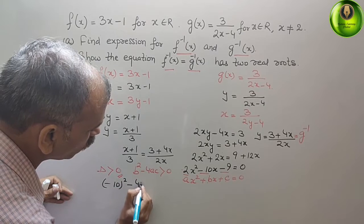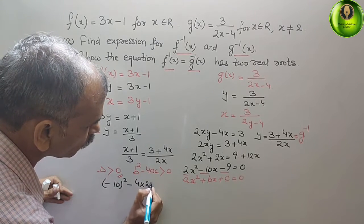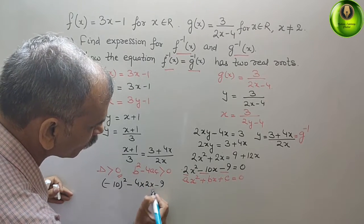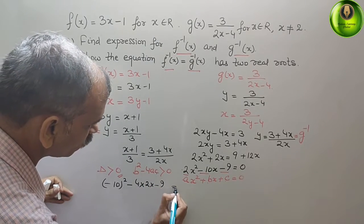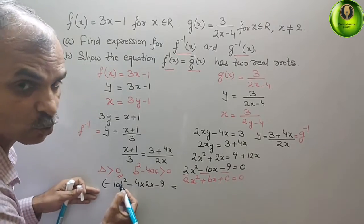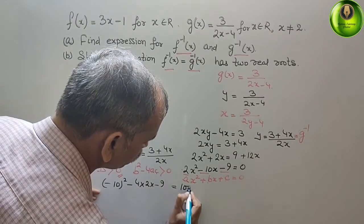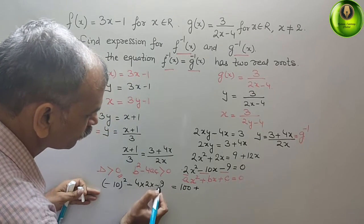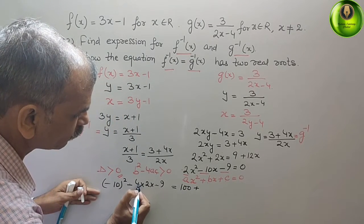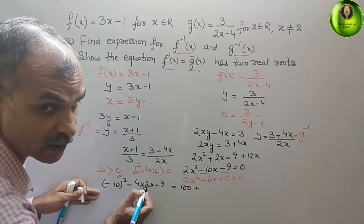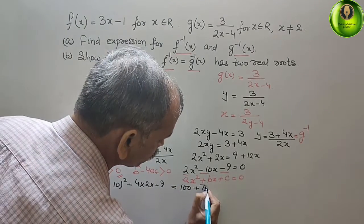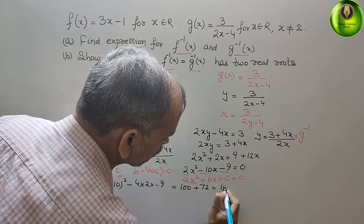Minus 4 into a, a is 2, and c, c is minus 9. So that is equal to minus 10 square is 100, and minus into minus is plus. Because it comes 4 into 2 is 8, 8 into 9 is 72. That is equal to 172.